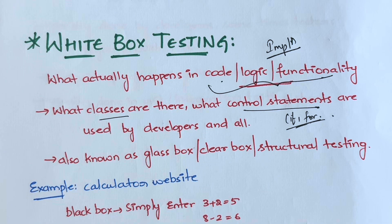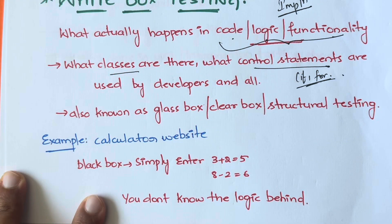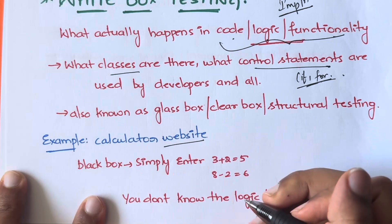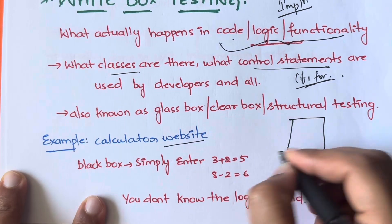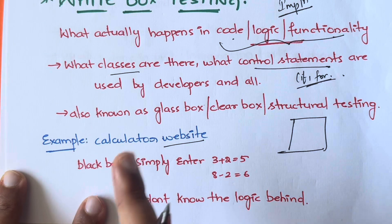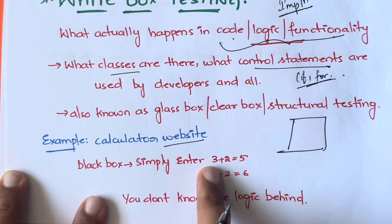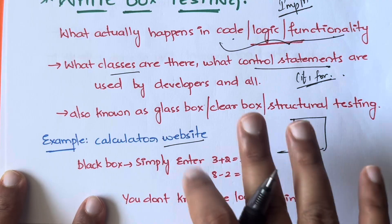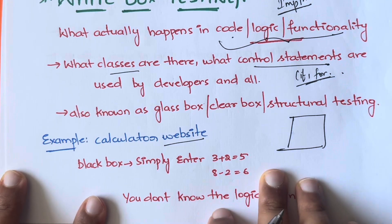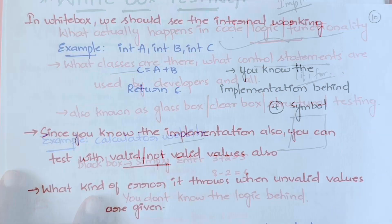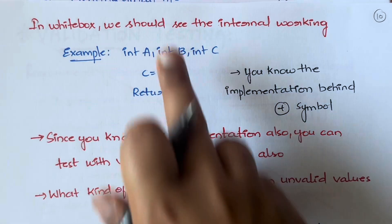Now let's understand this with an example. Let's say you are developing a calculator website. In black box testing, if you simply enter 3 plus 2 it will give you 5, or 8 minus 2 — whatever you give, it returns the result, but you don't know what is happening behind the scenes. That is black box.